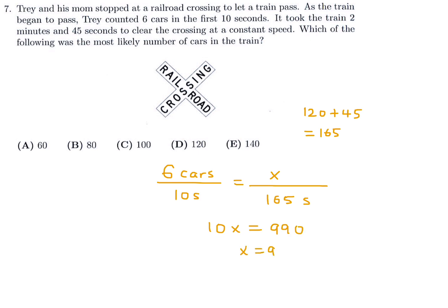So 99 cars will pass in 2 minutes and 45 seconds. The most likely number of cars is the closest to 99, which is 100. Number 7, the answer is C.